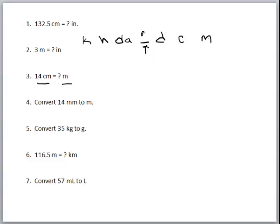For example, if we're using the base unit meters, there would be 10 decimeters in a meter, 100 centimeters in a meter, and 1,000 millimeters in a meter. On the other hand, there are 10 meters in a decameter, 100 meters in a hectometer, and 1,000 meters in a kilometer.